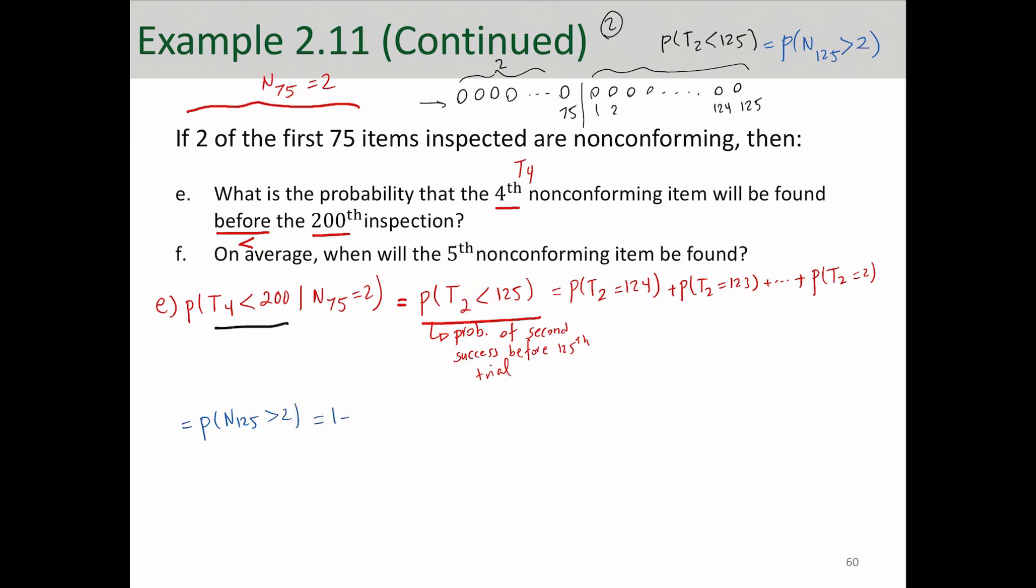So we can say probability of N125 greater than 2, which is 1 minus probability of N125 less than or equal to 2. So these three binomial probabilities, if you calculate them and subtract from 1, you get to that probability. You don't have to calculate all of these probabilities of negative binomial. That's just a smarter way of calculating this probability.